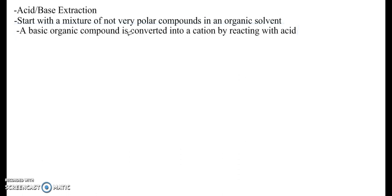And acid-base extractions are very useful when we're trying to separate compounds that have different acid-base characteristics, for instance an acid from a neutral compound, an acid from a basic compound, or a neutral from a basic compound. And I want to go through at least one example of how this works. But in general, start with a mixture of not very polar compounds in an organic solvent, and at this point we change the polarity of one of the compounds by using its acid or base properties. A basic organic compound can be converted into a cation by reacting with an acid.